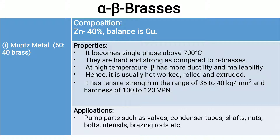The first type of alpha-beta brass is Muntz metal, which is 60-40 brass with 40% zinc and balance copper. It becomes a single phase above 700°C. It is hard and strong compared to alpha brasses. At high temperatures, the beta phase has more ductility and malleability, so it is usually hot-rolled or extruded. It has good mechanical properties and applications include pump parts, valves, condenser tubes, shafts, nuts, bolts, utensils, and brazing rods.